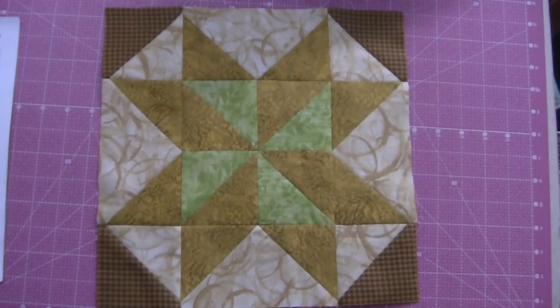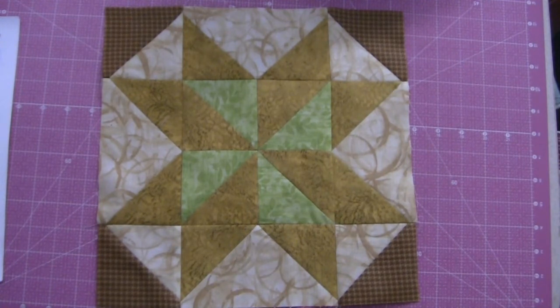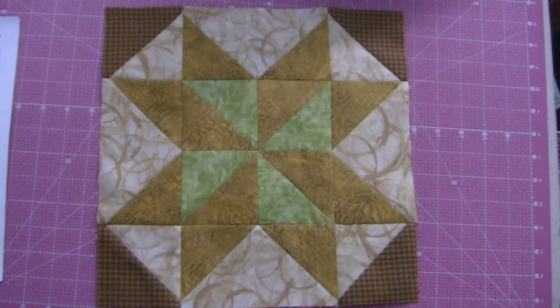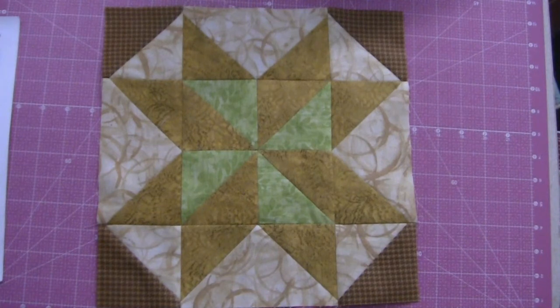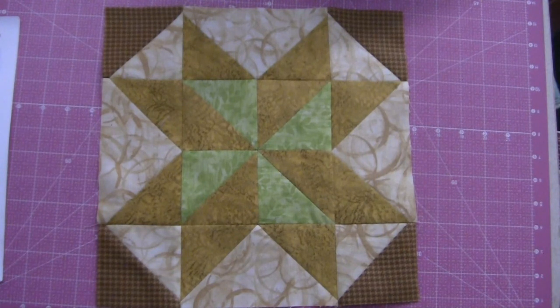And there you have it, Block 6 Star Puzzle of the 2018 Cheshire Quilters Guild Block of the Month. Next up is Block 7 Rippling Star, which is also part of Month 4 of the 2018 Cheshire Quilters Guild Block of the Month. See you there!